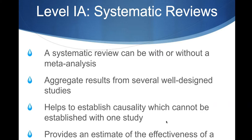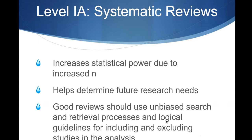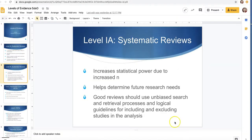A systematic review also provides an estimate of the effectiveness of treatment — it gives the effect size, so not only does it work, but how much change on average we're going to see with our clients. It gives us increased statistical power due to an increased N, the number of participants. It also helps determine future research needs, and we're able to see what we don't know about that topic. Good reviews use an unbiased search and retrieval process and logical guidelines for including and excluding studies in the analysis.